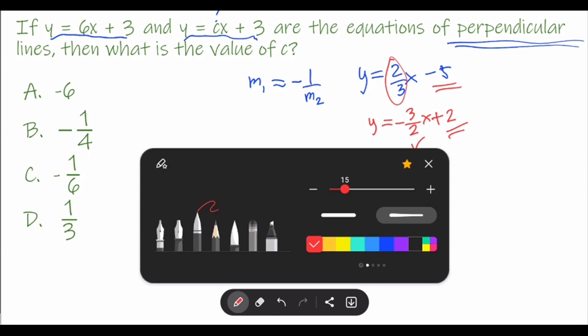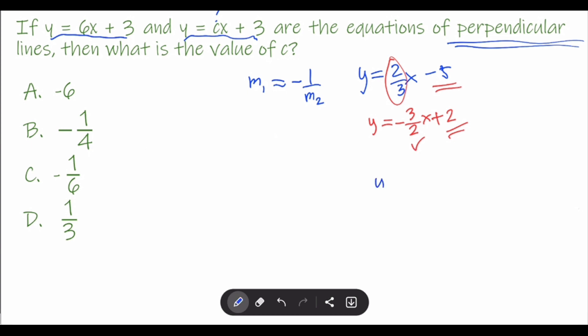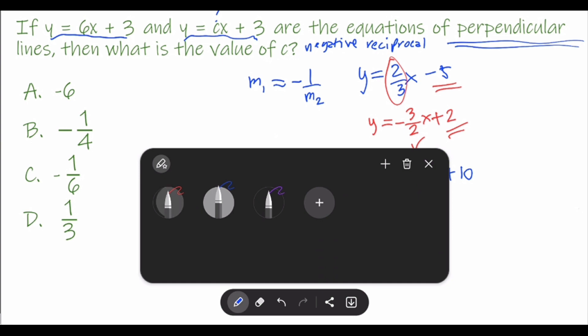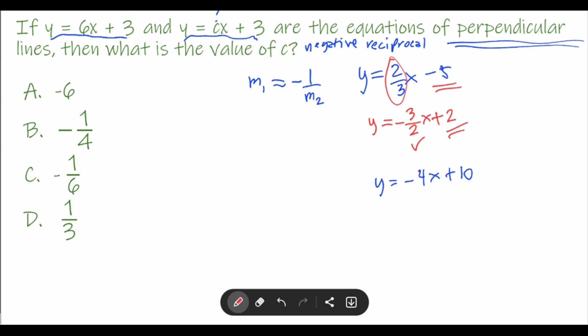Another example: if we have an equation y = -4x + 10, whatever the y-intercept is doesn't matter as long as the slope is a negative reciprocal.